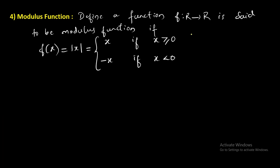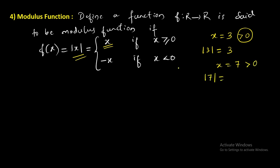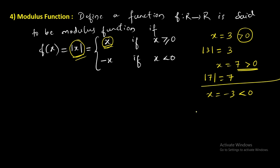The meaning of modulus function is: when I take x equal to a number greater than 0, say 3, modulus of 3 equals x when x is greater than 0, so modulus of 3 is 3. If I take minus 3, which is less than 0, then modulus of minus 3 applies the rule modulus of x equals minus x, so minus of minus 3 gives plus 3.